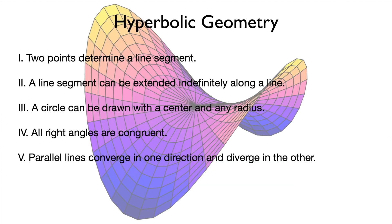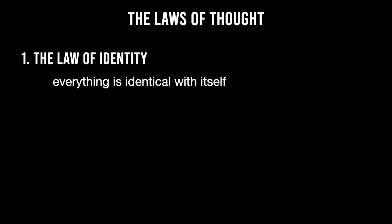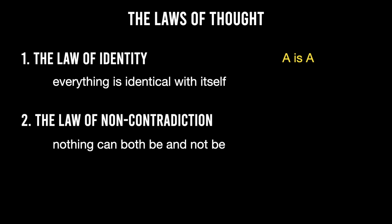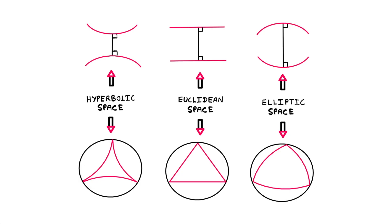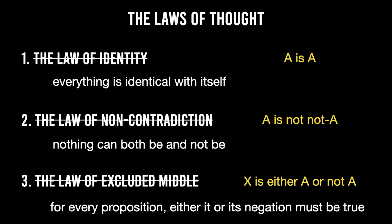Such as hyperbolic geometry, where all parallel lines actually converge in one direction and diverge in the other. In logic, the traditional axioms are called the fundamental laws of logic, or the laws of thought. The first is the law of identity: everything is identical with itself — A is A. Then there's the law of non-contradiction: nothing can both be and not be; two contradictory statements cannot both be true in the same sense at the same time — A is not not-A. The third is the law of excluded middle: for every proposition, either it or its negation must be true — X is either A or not-A. However, just like non-Euclidean geometry, there exist other systems of logic that reject at least one of these three laws.